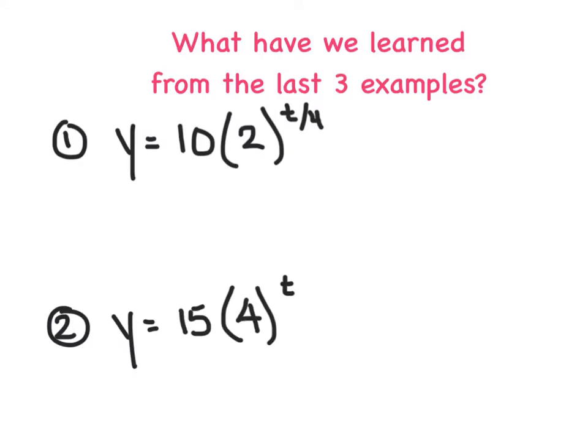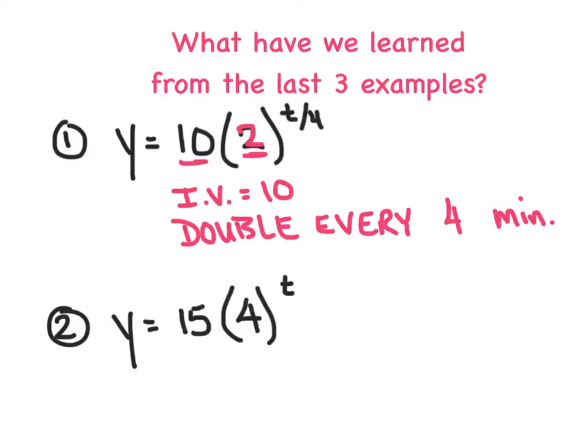So reflecting on the last three examples, we want to ask ourselves, what have we learned or what could we surmise? So in this first example here, again, it's an exponential function because of where the t is located. And we could say that the 10 here, that's my initial value. So when t equals 0, the y value would be a 10. And then what we're going to say is that these y values, they're going to double. Notice I didn't say triple. They're going to double because of the base right here. This number right here, b, dictates whether we triple, double, whatever. We're going to double every how often? We're going to double every 4 minutes or seconds or whatever the unit of time happens to be. And that 4 dictates how long it takes before we double.